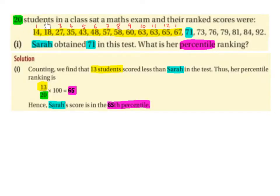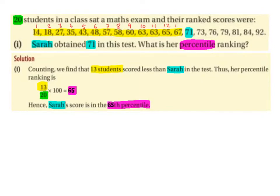20 students in a class sat a maths exam, and their ranked scores were: 14, 18, 27, 35, 43, 48, 57, 58, 60, 63, 63, 65, 67, 71, 73, 76, 79, 81, 84, and 92. So the lowest score was 14, the highest score was 92, and they are in order from smallest to largest.